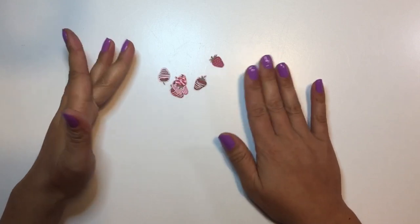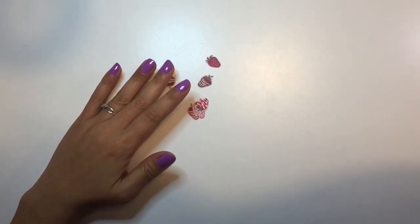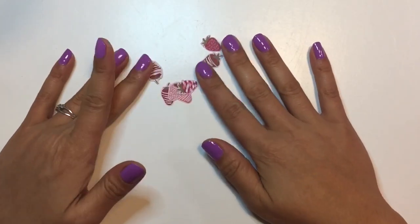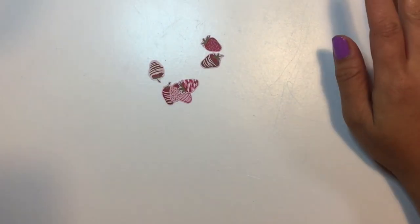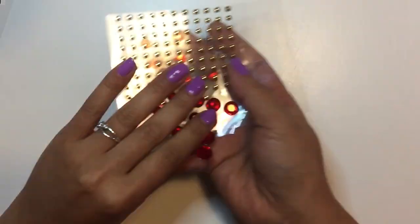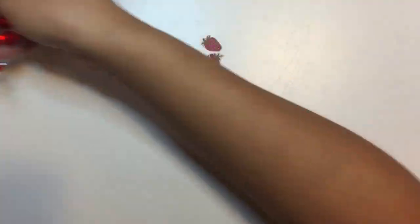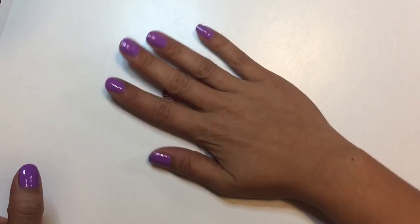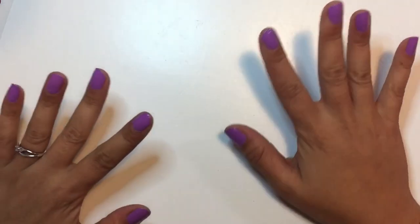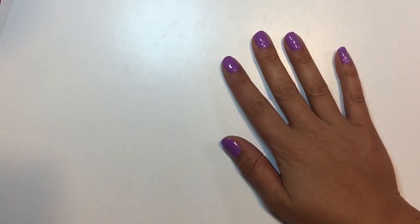And then you're going to need some things to embellish with. These are actually strawberries that I cut from the paper pad. It was actually a sheet of paper that I fussy cut images out. And then you could also use gemstones or any kind of embellishment you want to use.